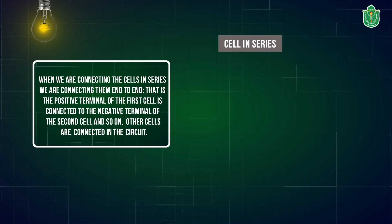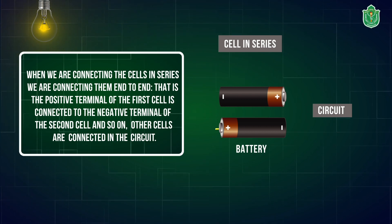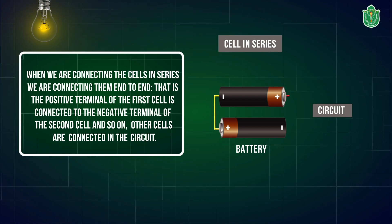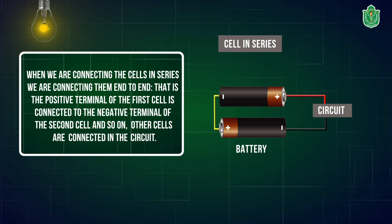The first method of connecting cells is to connect them in series. When connecting the cells in series, we are connecting them end to end. That is, the positive terminal of the first cell is connected to the negative terminal of the other cell, and so on. This arrangement of connecting the cells is known as connecting the cells in series.